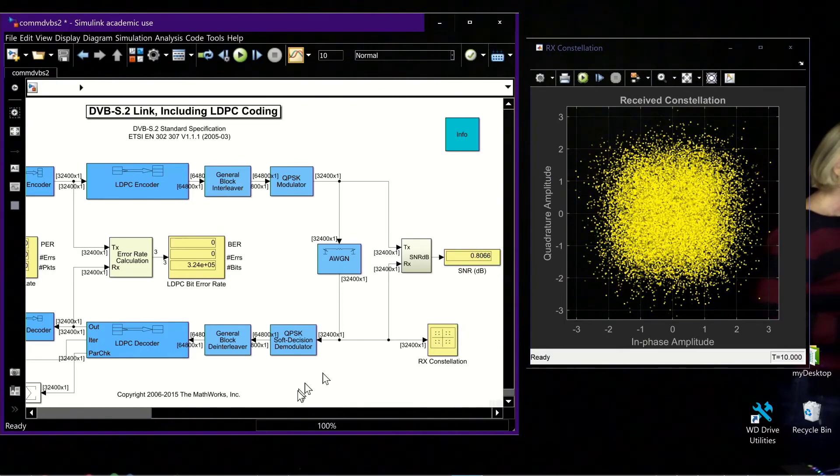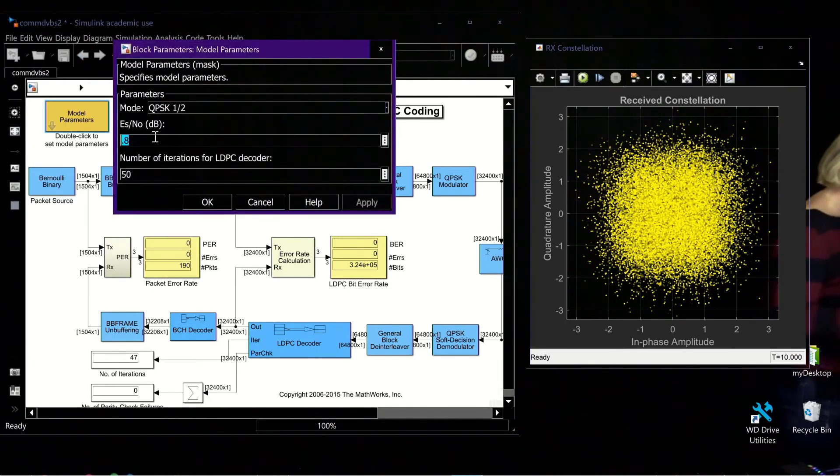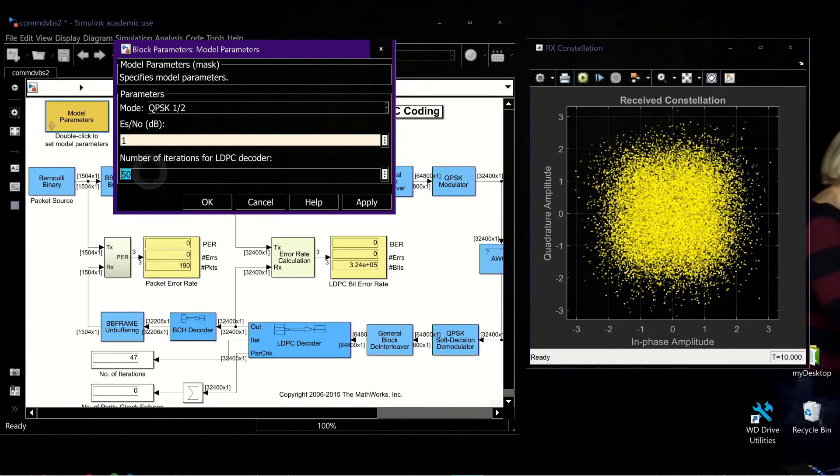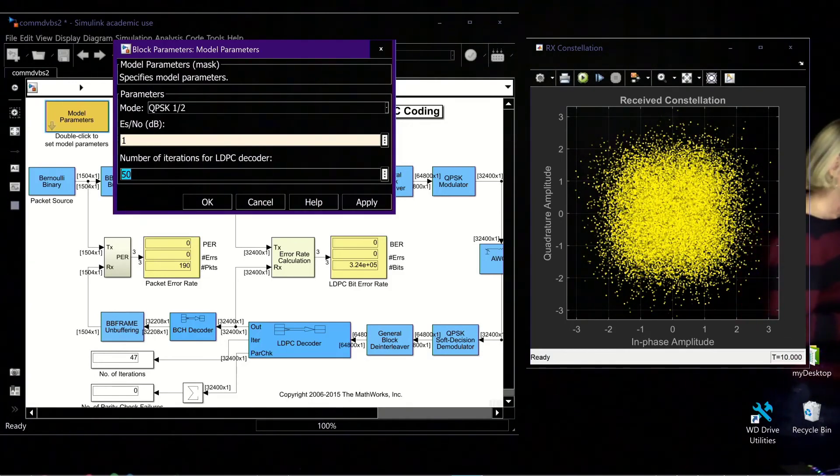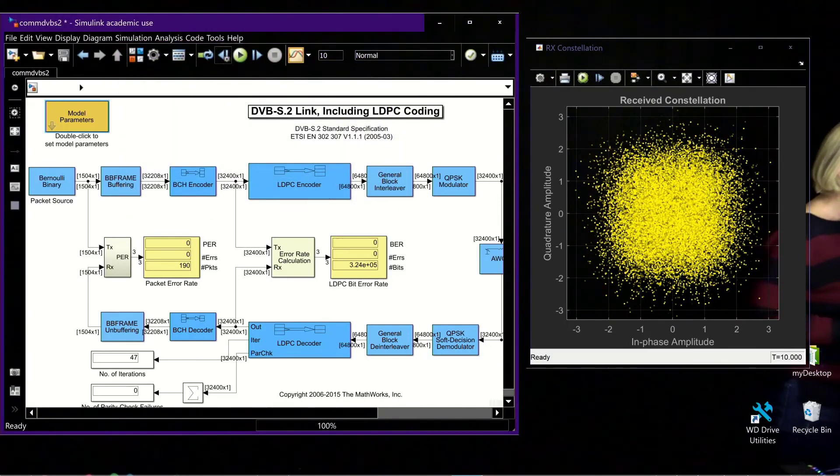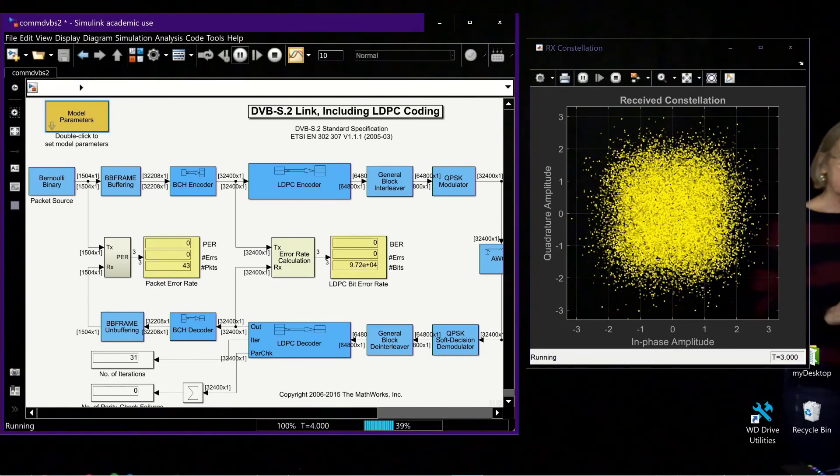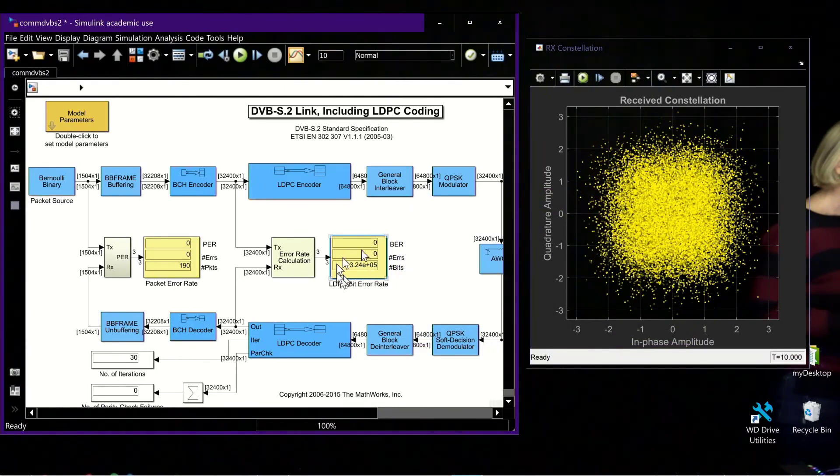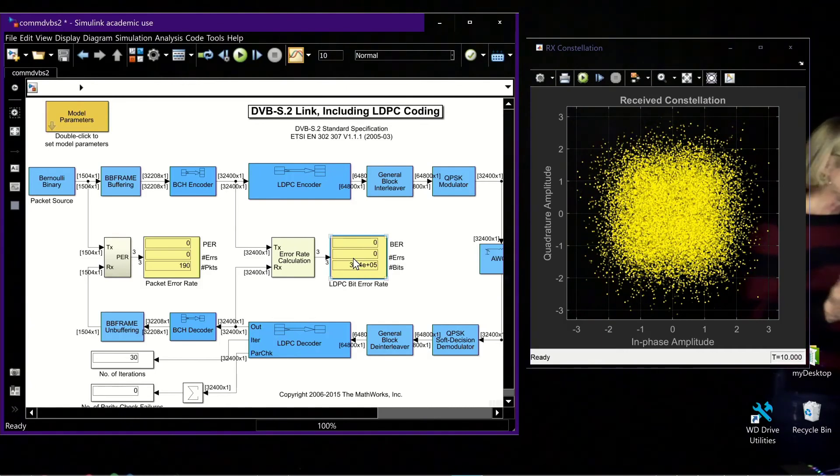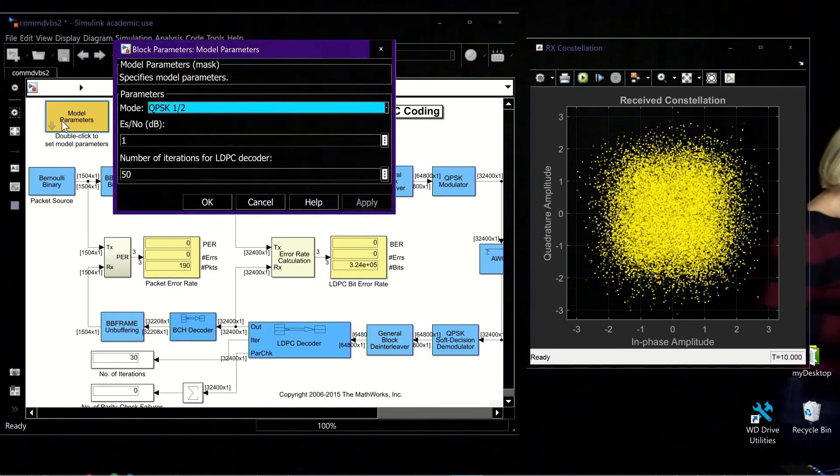The SNR now is set at 0.8 dB. I'm going to go into the parameters and set it to 1. Here is the number of iterations for the decoding process. If I made that smaller, the error performance would not be as good, but we're going to leave it there for now. I'm going to run my simulator. It starts out, builds up the received constellation. You can see here, it's counting the errors, went up to 10 to the fifth bits and it counted no errors. It's being able to correct all those errors. There were three packets, no errors there as well.